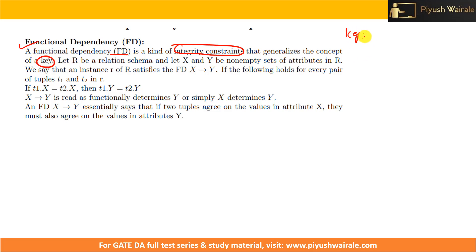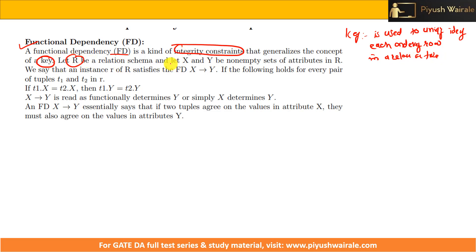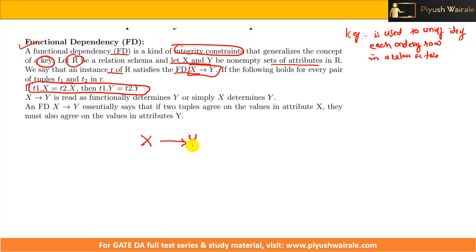A key is used to uniquely identify each and every row in a relation or table. Let R be a relational schema and X and Y be non-empty sets of attributes. X and Y can be an individual attribute or a set of attributes. An instance r for R satisfies FD X determines Y — written X→Y — which is read as 'X functionally determines Y'.